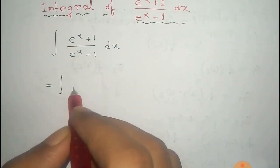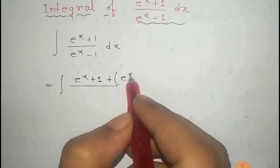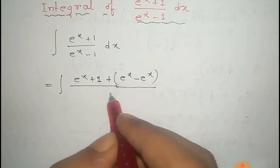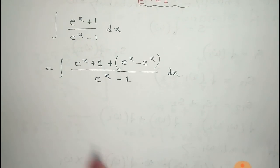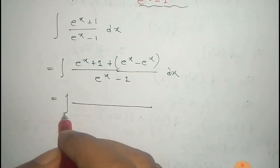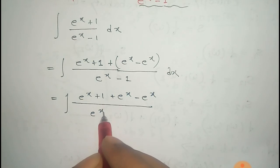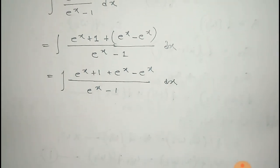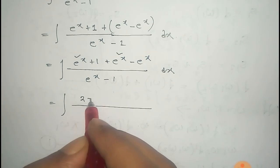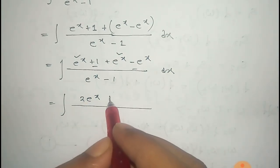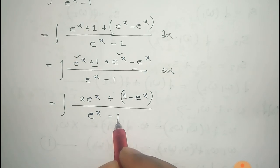That is equal to e to the power x plus 1, and we can write this as e to the power x minus e to the power x — they will cancel — so we can take this by e to the power x minus 1 into dx. That is equal to the integral of e to the power x plus 1 plus e to the power x minus e to the power x by e to the power x minus 1. From these two terms we can write twice e to the power x, and these two terms that is 1 minus e to the power x divided by e to the power x minus 1 into dx.